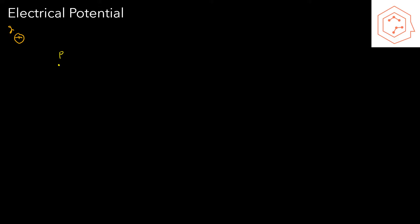Before we talk about electrical potential at a point in a system of charges, we first need to define electrical potential due to a point charge. Suppose we have a positive point charge q, and a point p around q where we want to find the electrical potential. If we bring another charge q2 from infinity up to point p, the electrical potential at p is given by E divided by q, where E is the electrical potential energy — k times q times q2 divided by the distance r.